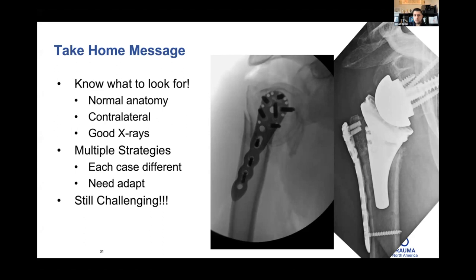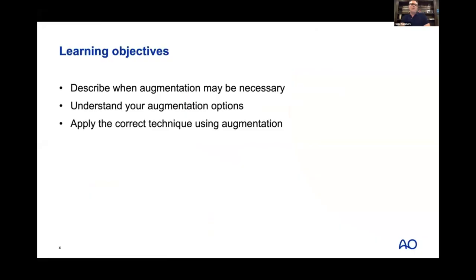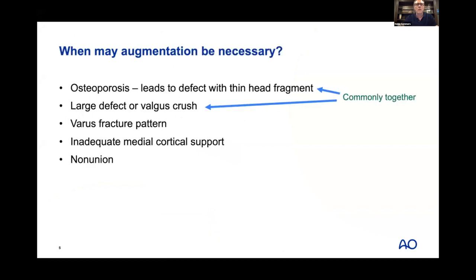Learning objectives for augmentation: understand when augmentation may be necessary, know your augmentation options, and apply the correct technique. Augmentation may be necessary when osteoporosis leads to a big defect with a thin head fragment — commonly with a valgus-impacted crush injury where, when you get it back out of valgus, you have a large defect. Also in varus fracture patterns with inadequate medial cortical support or severe medial column comminution, and in non-unions.